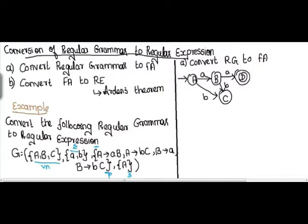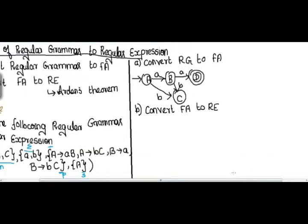Now I am going to convert this finite automata to regular expression using Arden's theorem, as I have explained in my previous video. For finding the regular expression, the first step is to write equations for each of the four states: A, B, C, and D.